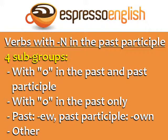A number of irregular verbs have N in the past participle. These can be divided into four subgroups: with O in the past and past participle, with O in the past only, verbs with the past form ending in EW and the past participle in OWN, and other.